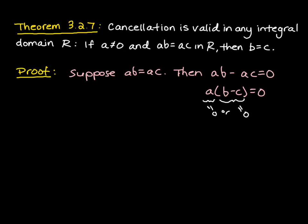So because our theorem states in its assumption that a is not equal to zero, then we must have that b minus c is equal to zero. So that finally gives us that b equals c as desired.